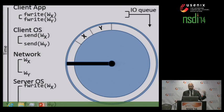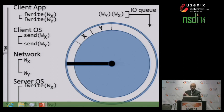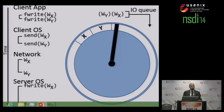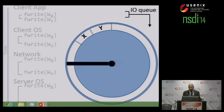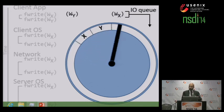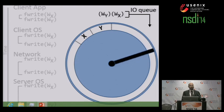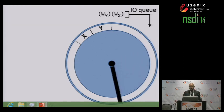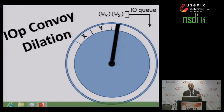The disk has an IO queue. In the ideal world, the two IOs would arrive at that queue at the same time, allowing a single head sweep to handle both writes. However, if the two operations are spread out in time, the disk head will start moving and handle the operation to X, but by the time Y arrives, the disk head will be out of position. This means we'll have to pay additional seek costs to move the disk arm back to Y. We call this effect IOP convoy dilation.